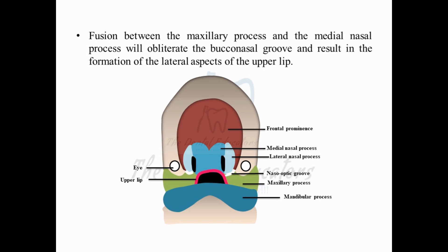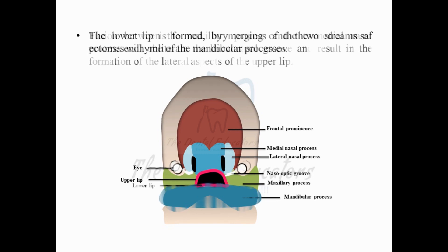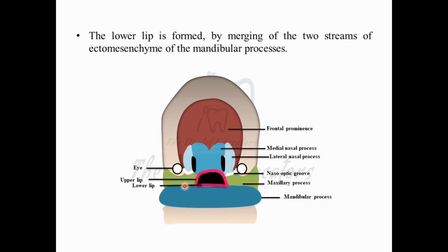The lower lip has not yet formed — we have two separate mandibular processes, one on the left and one on the right. The two mandibular processes of the right and left hand side then fuse with each other, helping in the formation of the lower lip area. The lower lip forms due to the fusion of the two mandibular processes on both sides.